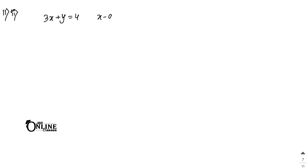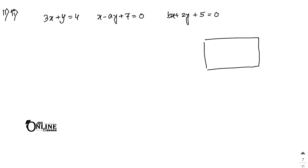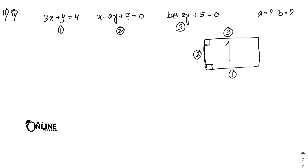Sum 11 part 2: lines 3x plus y equal to 4, x minus ay plus 7 equal to 0, and bx plus 2y plus 5 equal to 0 form three consecutive sides of a rectangle. Find a and b. In a rectangle, consecutive sides are perpendicular and opposite sides are parallel, so equations 1 and 2 are perpendicular, equations 2 and 3 are perpendicular, and equations 1 and 3 are parallel.